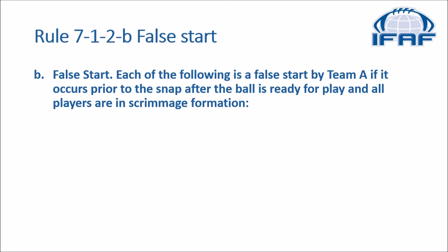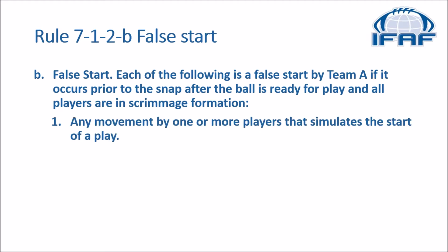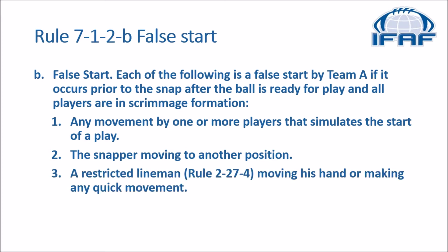In the rulebook we go to rule 7-1-2 dealing with false start. Each of the following is a false start by team A if it occurs prior to the snap after the ball is ready for play and all players are in scrimmage formation: 1. Any movement by one or more players that simulates the start of a play. 2. The snapper moving to another position. 3. A restricted lineman according to rule 2-27-4 moving his hand or making any quick movement.